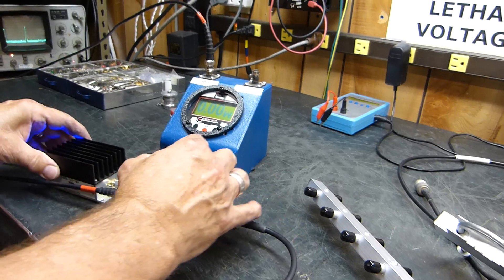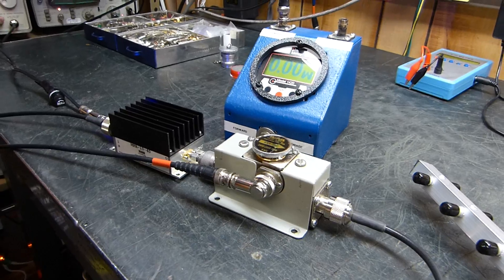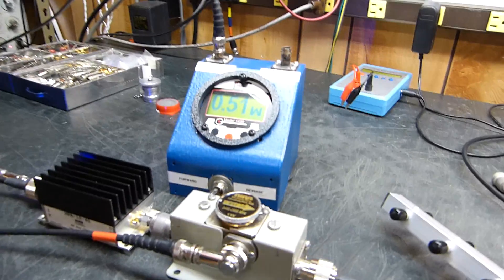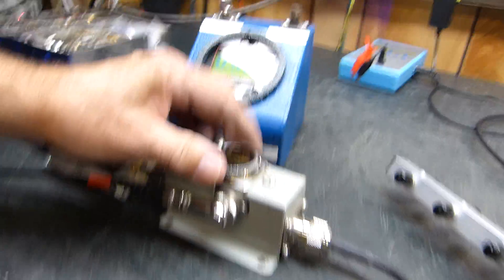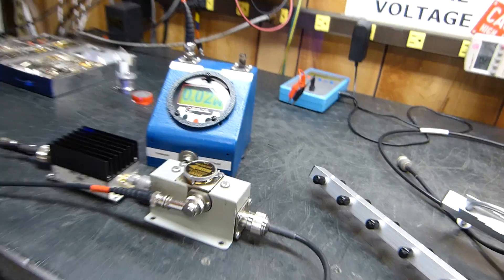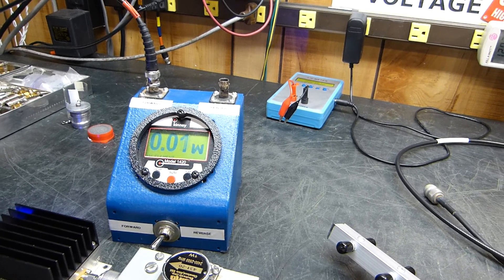Okay, I got it hooked up and we're on the one watt scale. We got a 2.4 to 2.5 gigahertz slug. Turn RF on. There's our forward power—point five, half a watt forward. Reflected power is pretty much zero. If I put my hand on it right here you can see that it does show some reflective power.